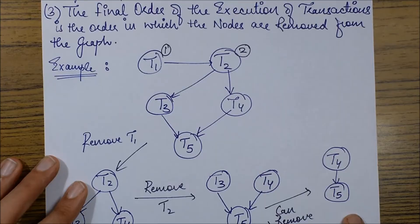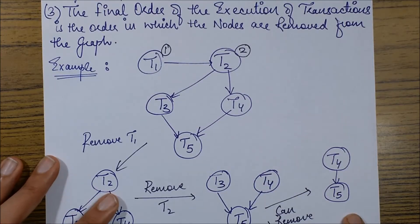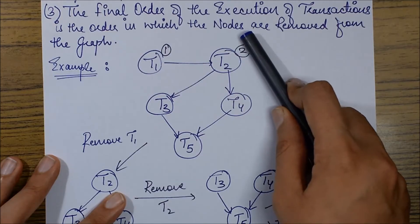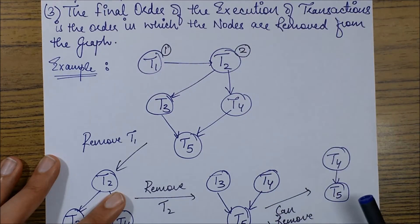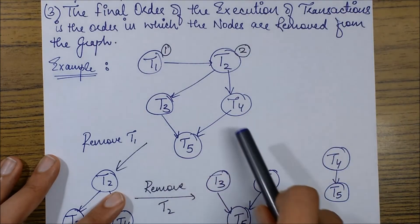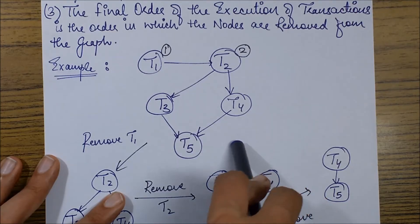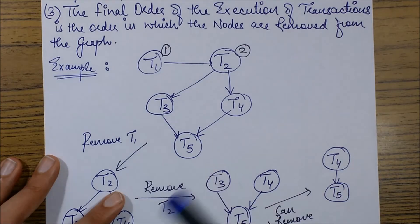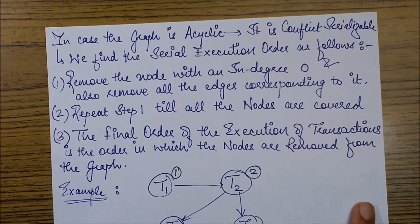Let's see an example of the precedence graph method. In this particular graph there is no cycle being formed, so this graph is acyclic, which means this particular schedule is conflict serializable. When a schedule is conflict serializable, we need to find the particular serial order in which these transactions will execute.